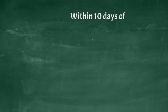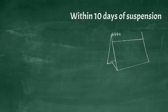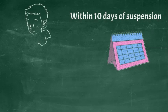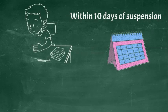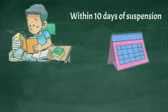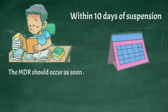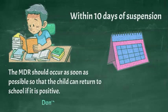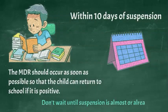An MDR must be scheduled within 10 days of the suspension. However, because a positive MDR means the child immediately returns to school and the suspensions cannot continue, it is very important that the school district take immediate steps to conduct the MDR rather than waiting until the last day of the out-of-school suspension or after the suspension has already been completed, so that the procedural safeguard is appropriately honored.